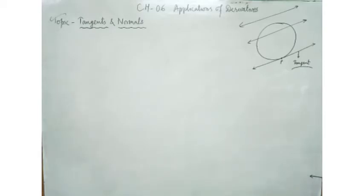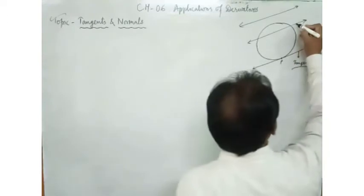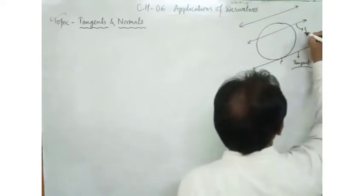The line above the tangent — look at it carefully — it is intersecting the circle in two distinct points; therefore it is called a secant. This is a secant.